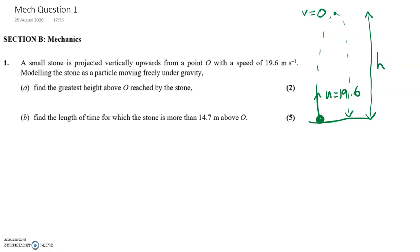So if we list all those things, we can then see what suvat is that we can use for part A. We've got U equals 19.6. I'm taking up as positive. So that's why I've got A equals minus 9.8. I've got V equals zero. And H is what I'm trying to work out.